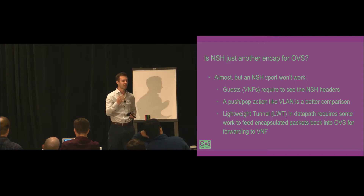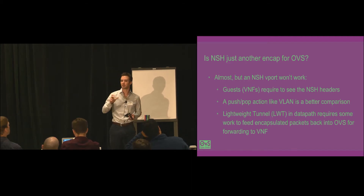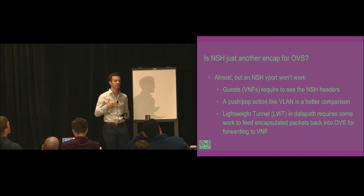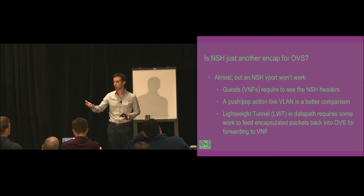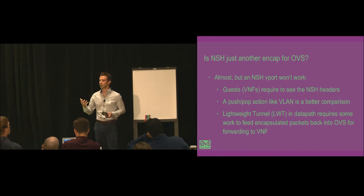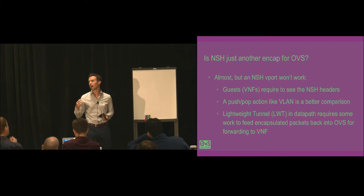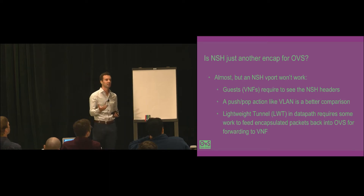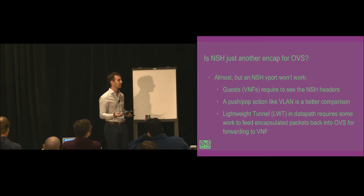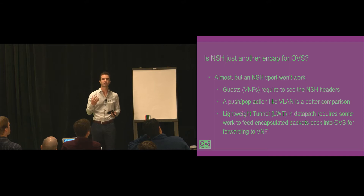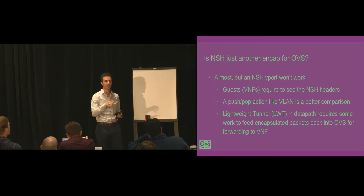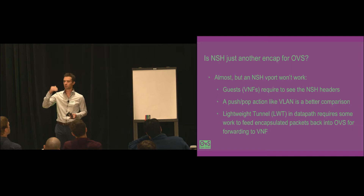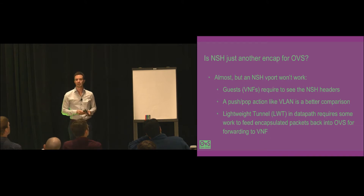Traditionally, this happened by OVS attaching metadata to the packet and sending it to a virtual software network device, which would then manipulate the packet before sending it out to a physical device. For NSH, we need more than that — we need the lightweight tunnel to feed the packet back to OVS so OVS can give it to a virtual guest through a vport. We need to extend the lightweight tunnel mechanism with a loopback mechanism, so OVS can do the encapsulation and send the packet to a service function. From an OpenFlow or northbound perspective, it's much more like a push/pop VLAN action.